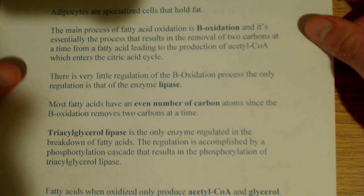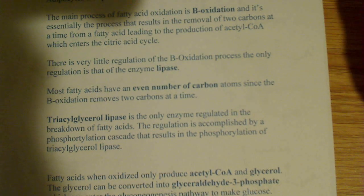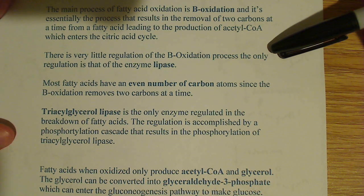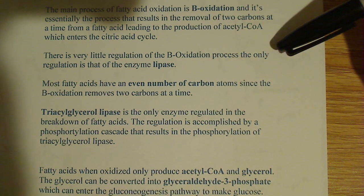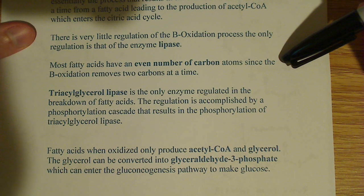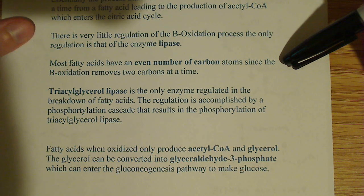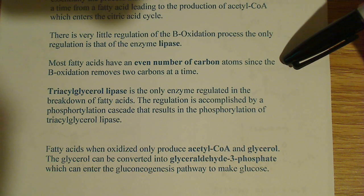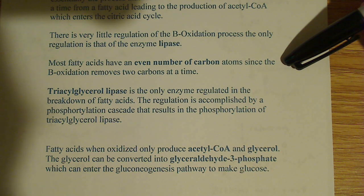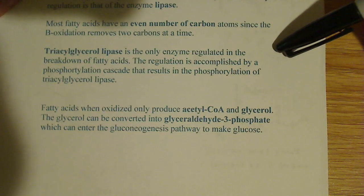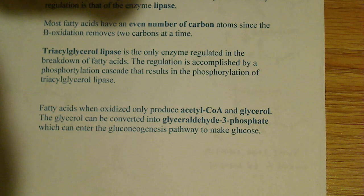There's very little regulation during beta-oxidation. The only regulation occurs at the enzyme triacylglycerol lipase. This also explains why most fatty acids have an even number of carbons — because breakdown occurs two carbons at a time. For example, a 16-carbon fatty acid produces eight acetyl-CoA molecules through seven rounds of beta-oxidation — it's always one less because the final two-carbon piece comes off automatically without requiring another round.